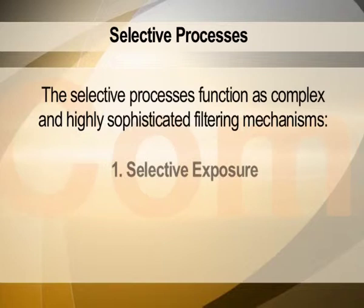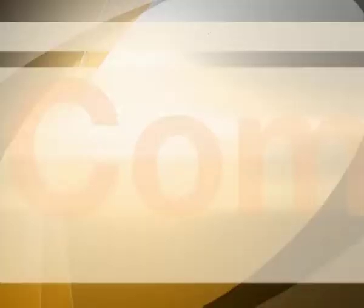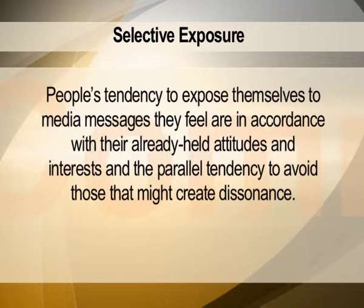So the selective processes are three in nature. First is selective exposure, second is selective retention, and third is selective perception. These are the three kinds of processes of cognition which an individual can go through. First, we will try to understand what selective exposure is all about. Selective exposure is basically the tendency of people to expose themselves to those messages which are in accordance with their belief system.